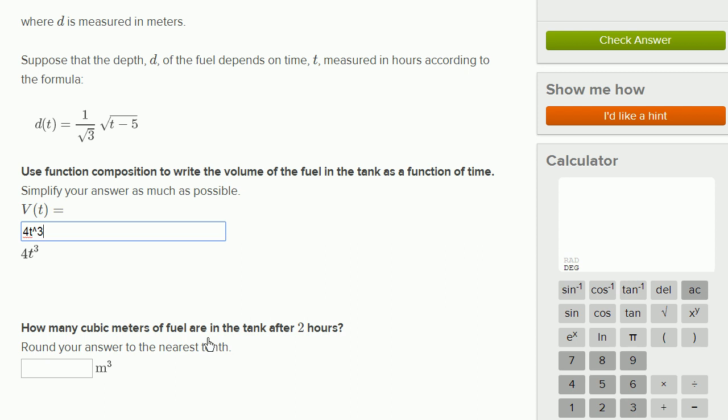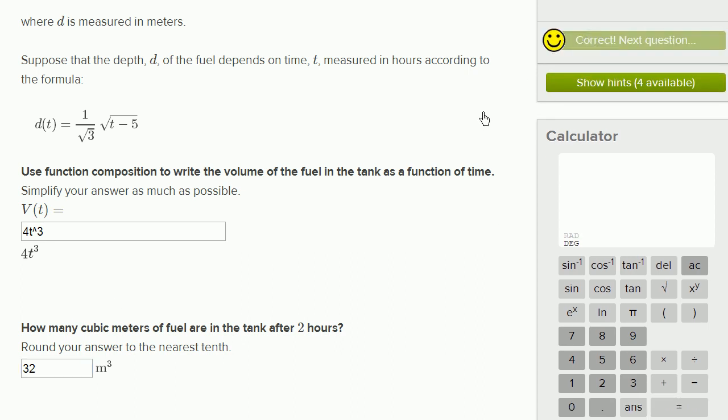How many cubic meters of fuel are in the tank after two hours? Round your answer to the nearest tenth. Well, two hours means t equals 2. So when t equals 2, the volume is going to be - 2 to the third power is 8, 8 times 4 is 32. And let's check our answer and we got it right.